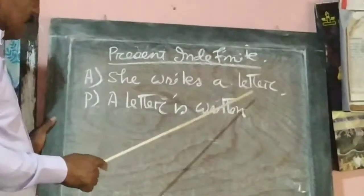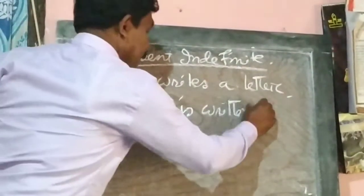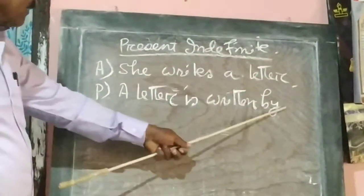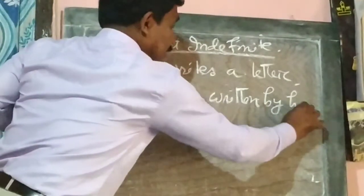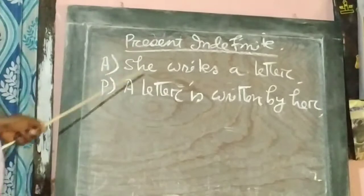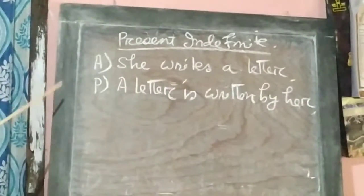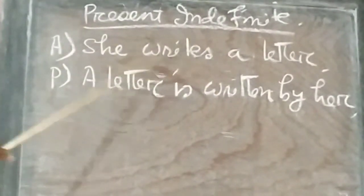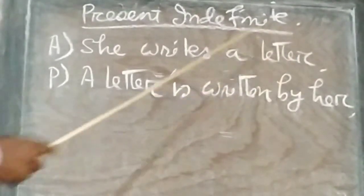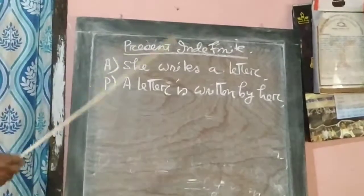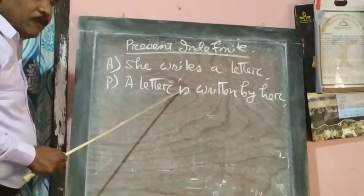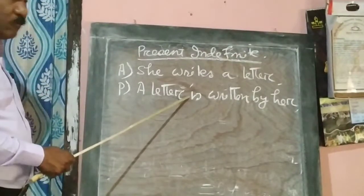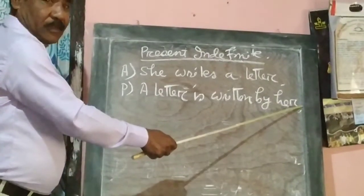The passive sentence becomes: 'A letter is written by C.' For the interrogative form in present indefinite tense: 'Does C write a letter?' becomes 'Is a letter written by C?'